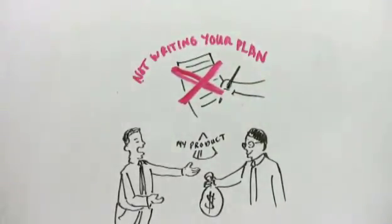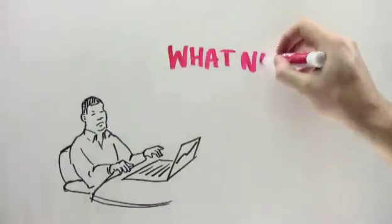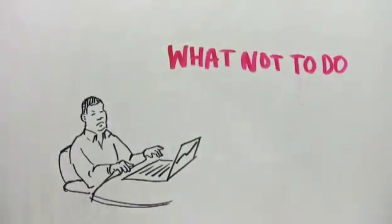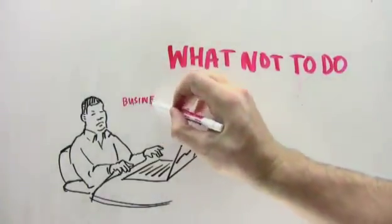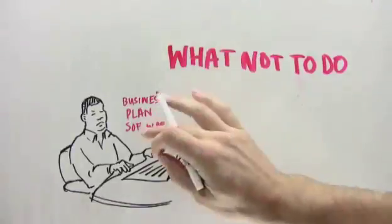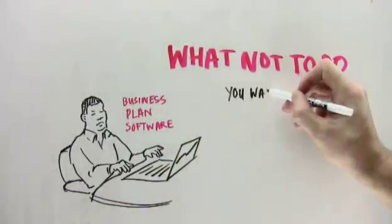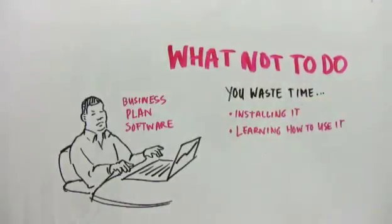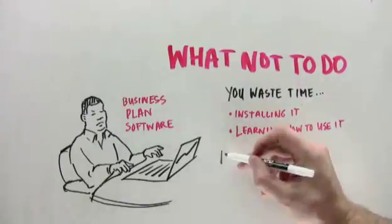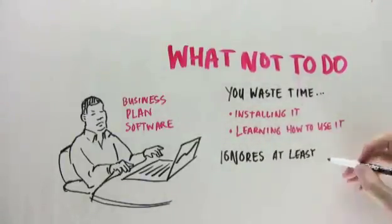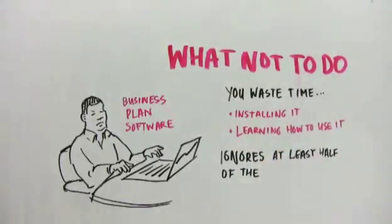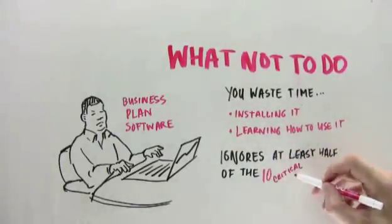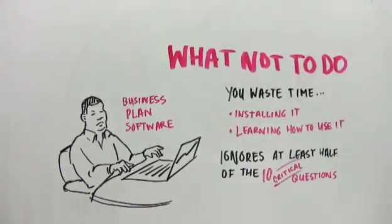It's just too long. I want you to be spending your time executing on your business, not spending time writing your plan. So before I tell you the shortcut and what you should do, let me start by telling you what you should not do. So the first thing not to do is to use business plan software. With business plan software, you're going to waste time installing it, you're going to waste time learning how to use it, and it's going to force you to answer tons of useless questions that should not be in your business plan.